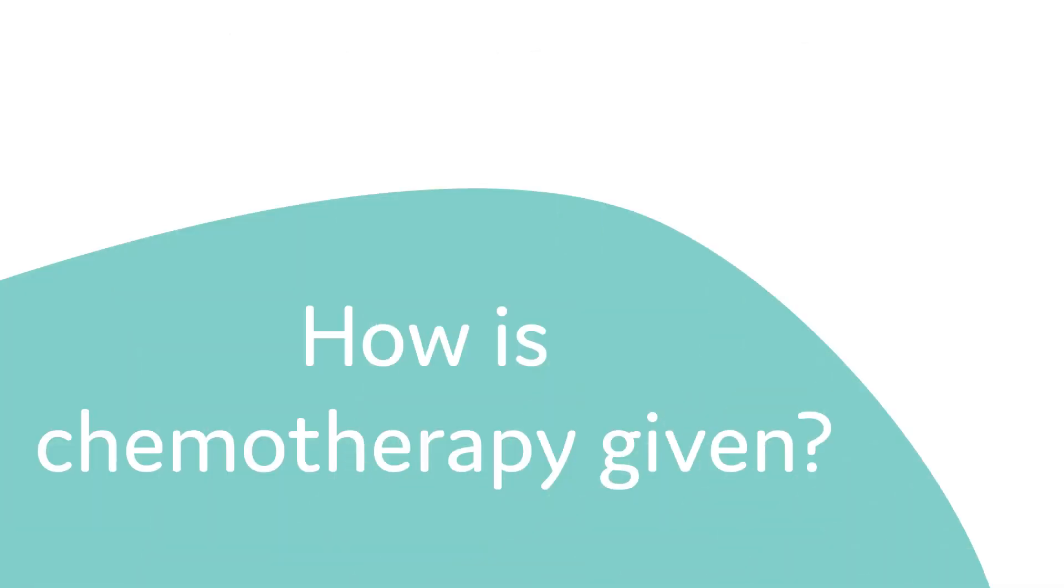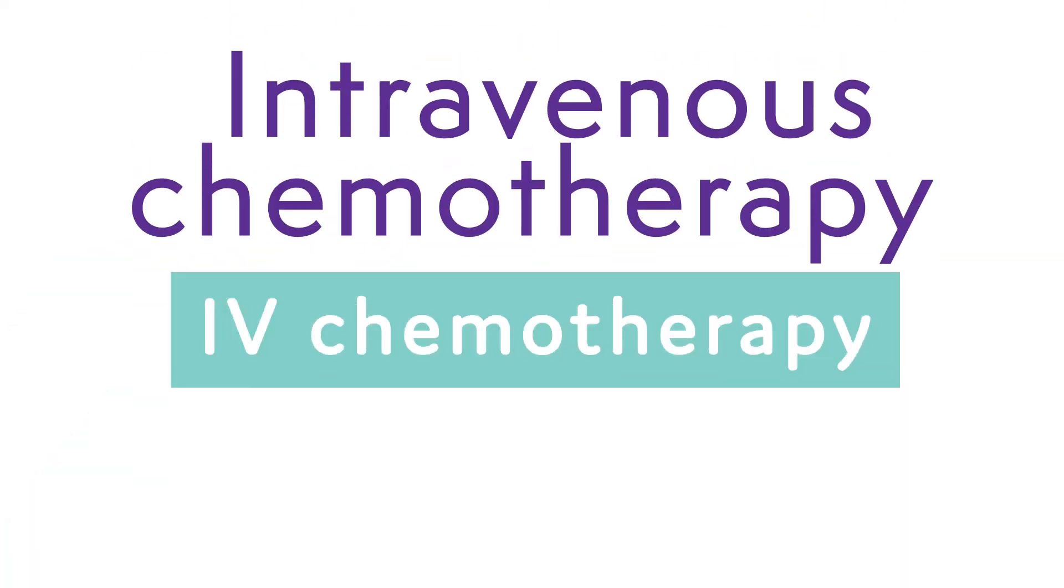How is chemotherapy given? Intravenous chemotherapy, often referred to as IV chemotherapy, means that drugs are given into a vein. This is the most common way to have chemotherapy for lymphoma.